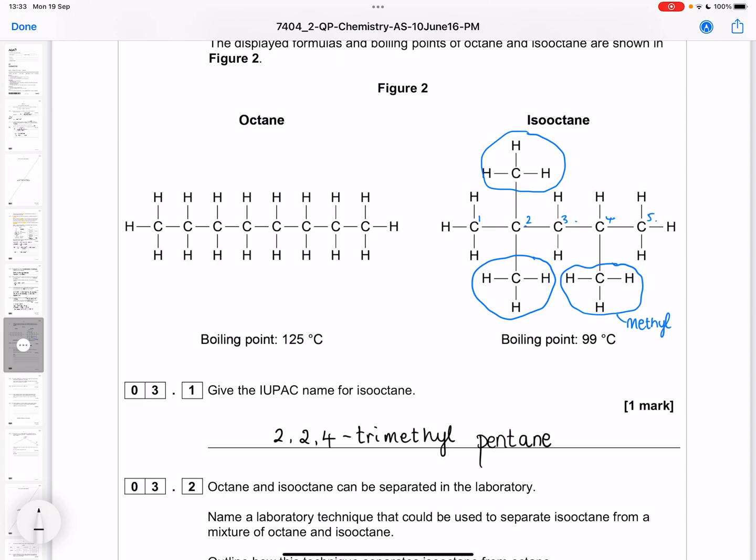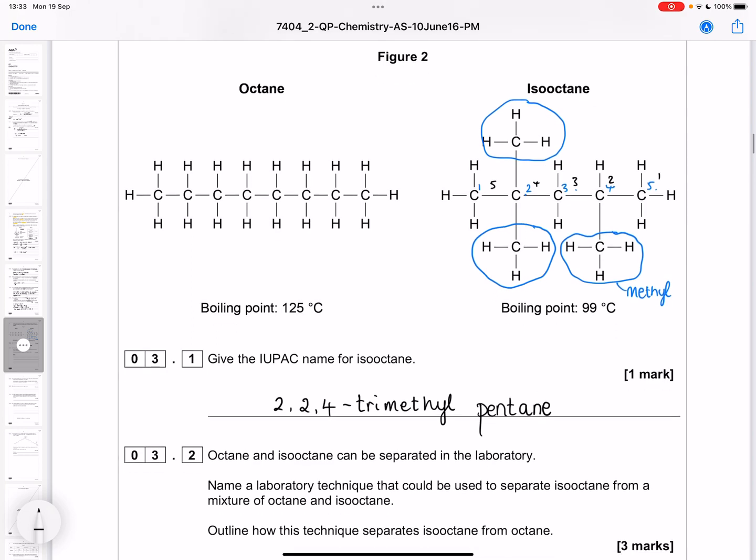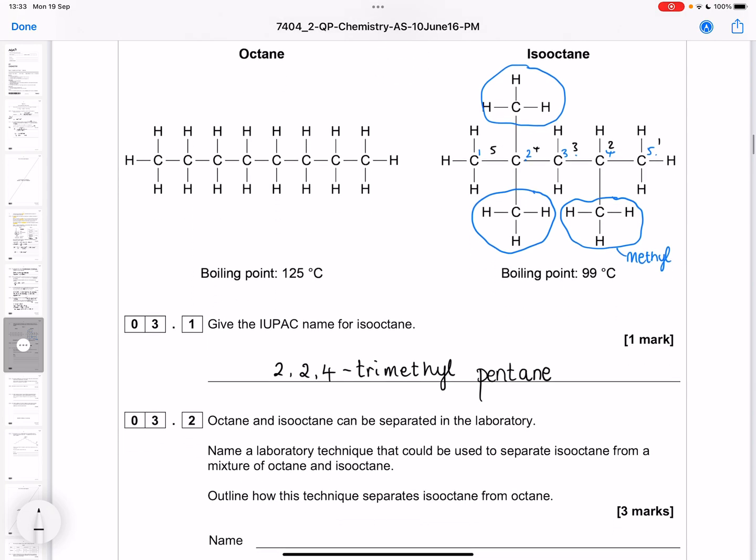So it's our name, 2,2,4-trimethylpentane. Had we numbered from the other side, the numbers would have been 2,4,4, and those numbers are bigger, so we take the smallest numbers possible. 2,2,4-trimethylpentane.